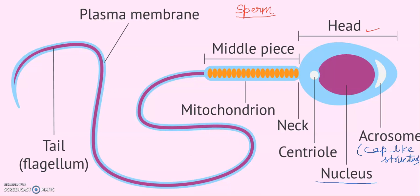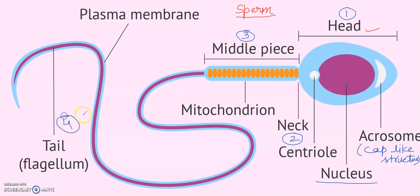This sperm contains so many parts. This region is called the head. The second region is called the neck. The third one is the middle piece. And the fourth is the tail or flagellum. I want to discuss in detail about all the parts.